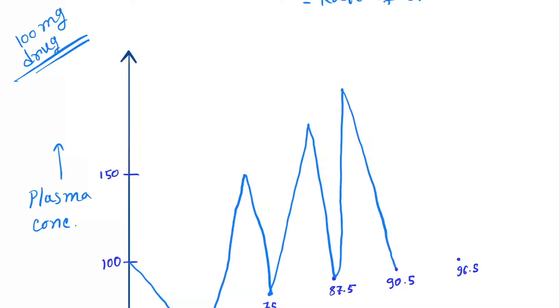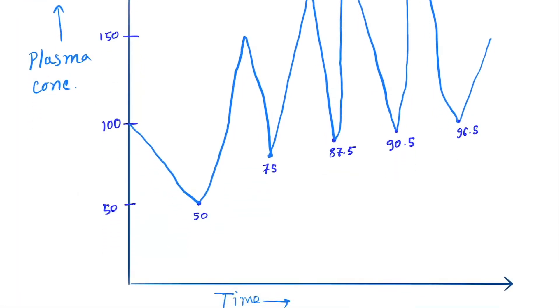It becomes 90.5. Then we add 100 milligrams of drug, so it's 195, and it comes down to half of its concentration again. It continues like this.